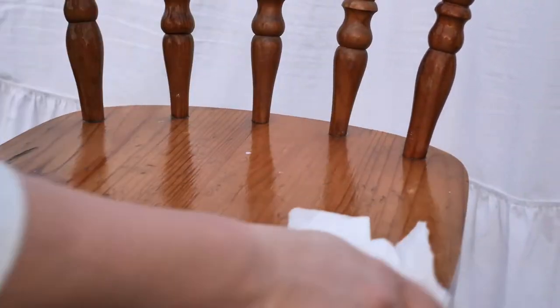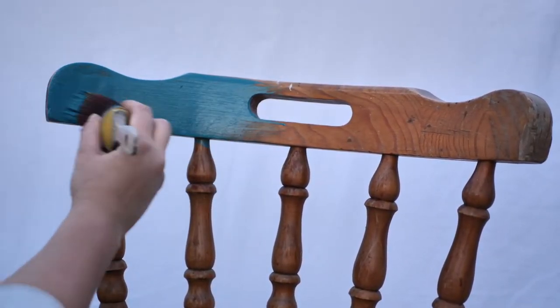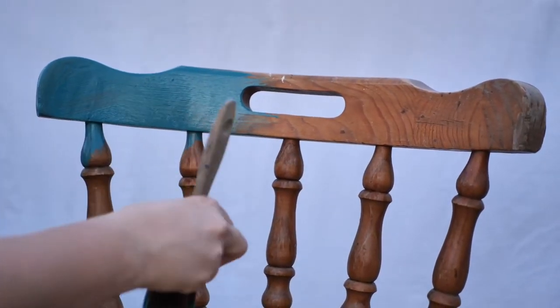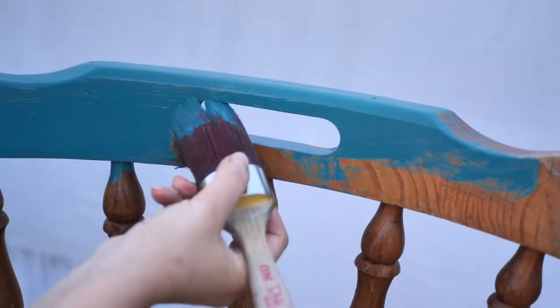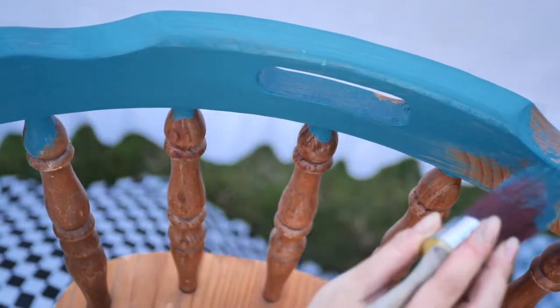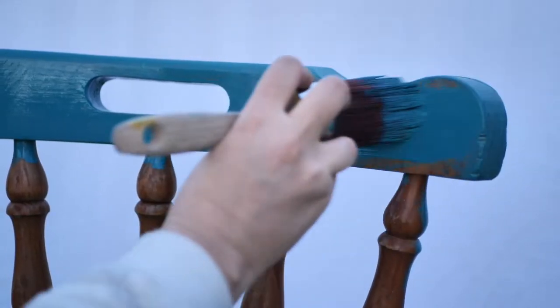We let it dry overnight, then we started to paint with this delicious color called Mirage. We use synthetic brushes from Dixie Belle for a nice smooth finish and they are also so great for blending, as we will do a little blending.